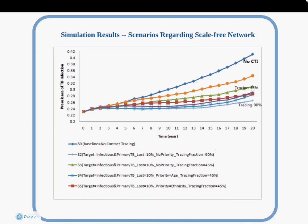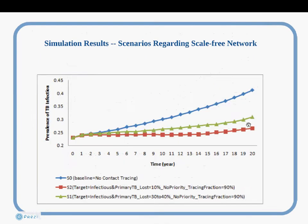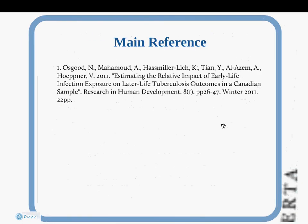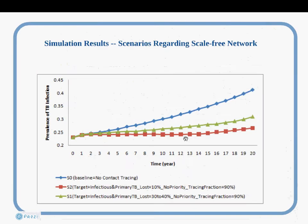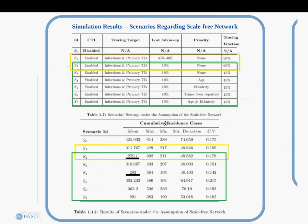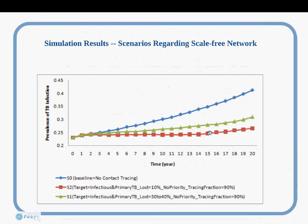There were some important findings. One was that there's a diminishing return: tracing the first 45% of contacts provides a lot more gain than tracing the second 45%. Another finding was that the speed of contact tracing doesn't matter much at all within the limits examined — whether it's three months or within one month, almost no difference.